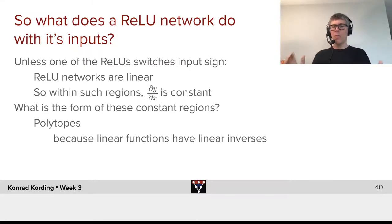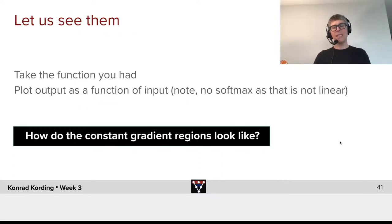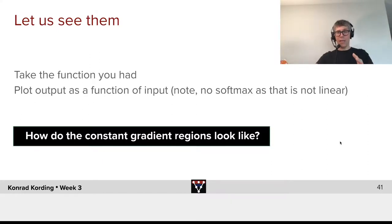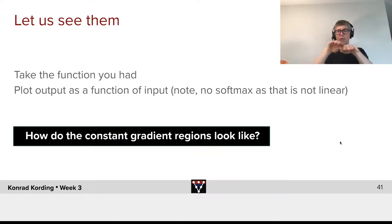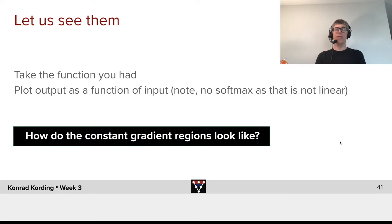What is the form of these constant regions? It turns out that it's polytopes, because linear functions have linear inverses. Instead of having this weird function that we cannot understand, what we really have is a function that is piecewise linear, where each of these linear regions is actually a polytope, which is something that we can meaningfully understand.